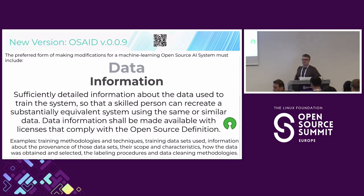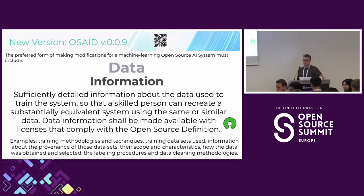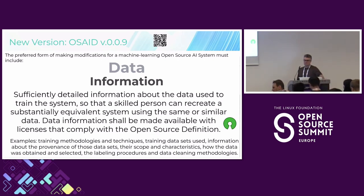Audience question: You talked about the preferred form to make modifications. When vulnerabilities are found in traditional software, it's possible to develop a fix if you have the source code and a compiler. Without the original data or access to it — especially if the original creator of the model is no longer maintaining it — how can someone build a patch to predictably modify that system, change the weights, and fix the vulnerability?